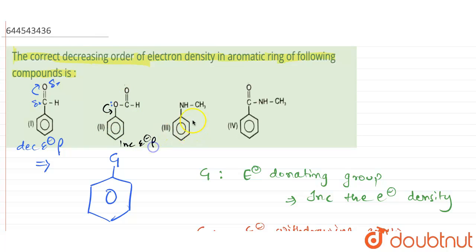Similarly, the third compound has nitrogen present. Nitrogen has a lone pair of electrons which can easily be donated to the benzene ring, which again increases the electron density.